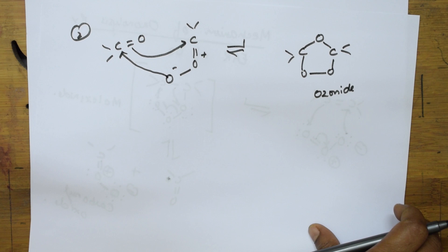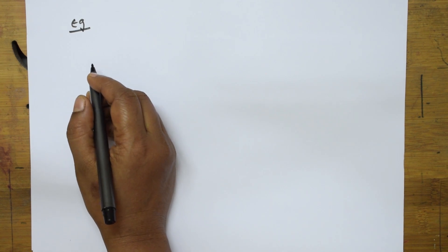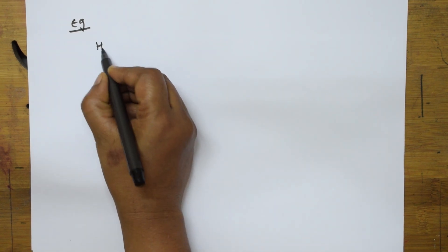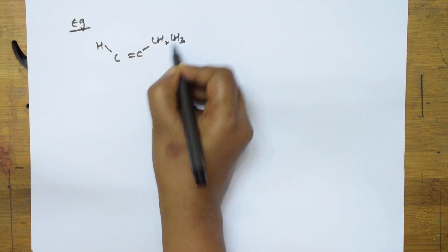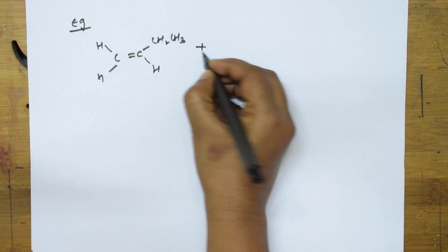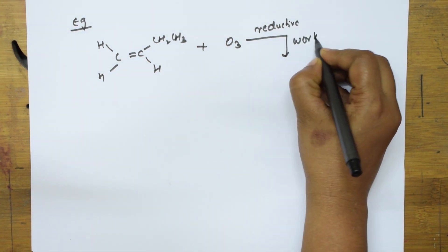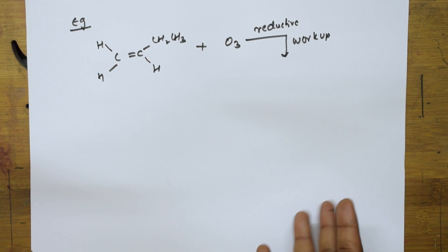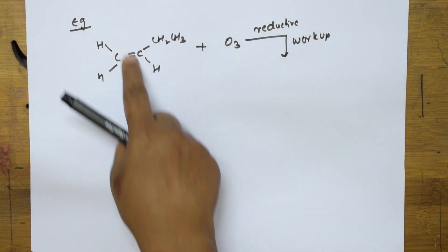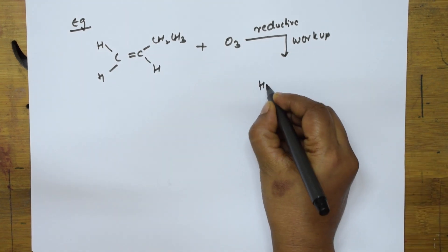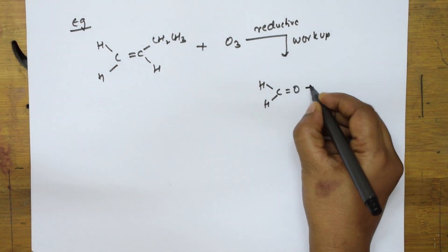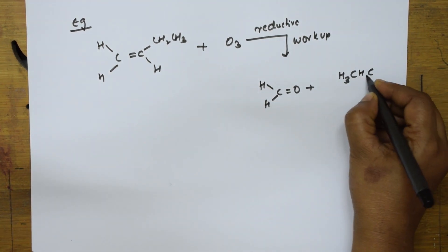This is the mechanism of ozonolysis. Now let me take the same mechanism and apply it in different examples. We will try all the possible combinations. Go back to the mechanism, understand it, and then come back and write the products.